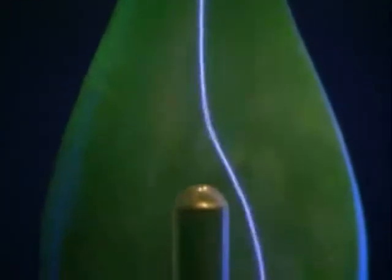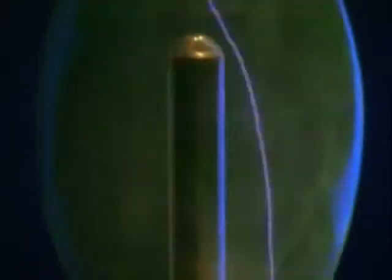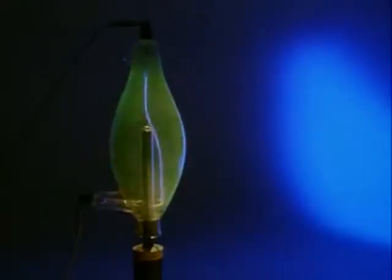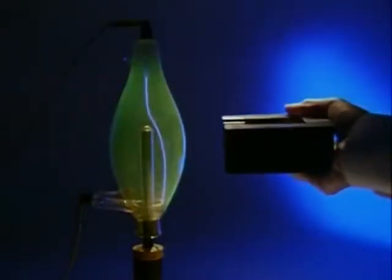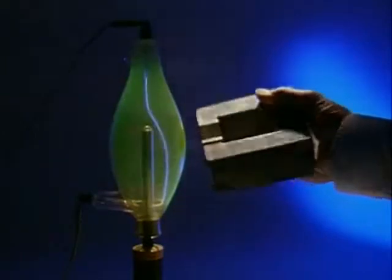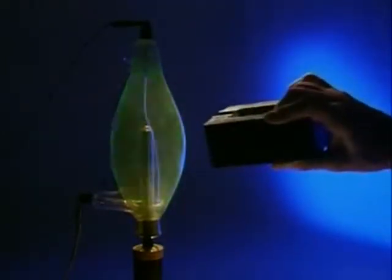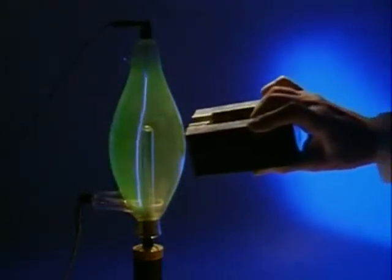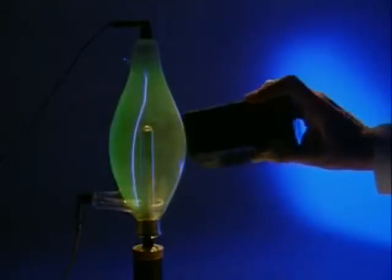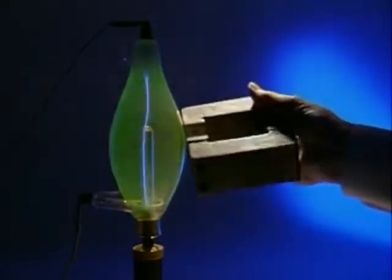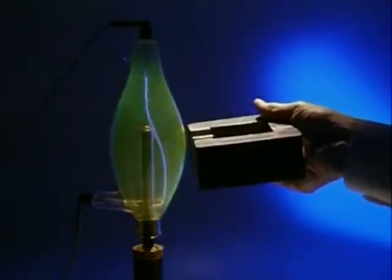This electric arc is also a stream of electrons. See what happens when a magnet is placed nearby. Because electrons are charged, their path can be deflected by a magnetic field. The same would happen with beta radiation.